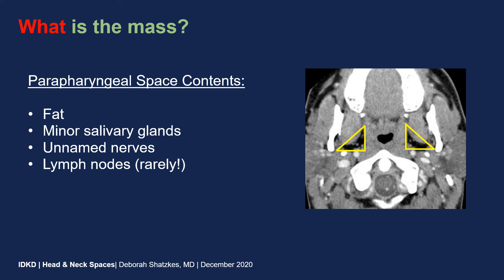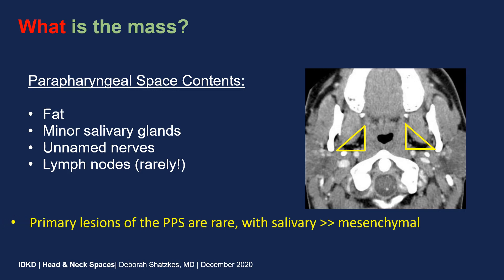Now we can talk about what the mass is. When one uses the spaces approach to head and neck imaging, it allows you to put a lesion in the space, then think about what that space contains and generate a space-specific differential diagnosis. The contents of the parapharyngeal space are really pretty simple — it's primarily composed of fat. There are some minor salivary glands in it and a few small unnamed nerve branches. Primary lesions of the parapharyngeal space are actually quite rare, with salivary lesions far outnumbering those composed of mesenchymal elements, including fat and nerves.